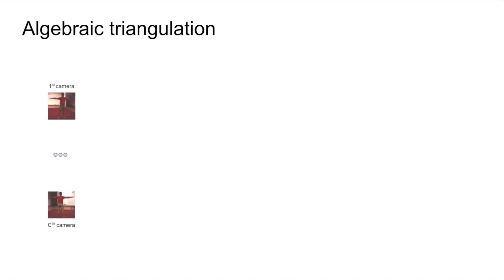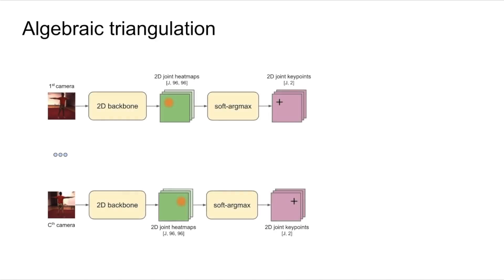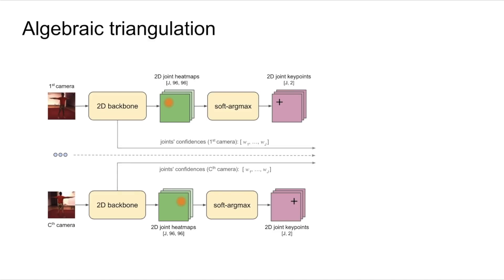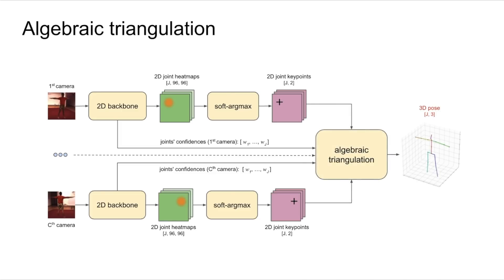Our first method is based on algebraic triangulation. The images from all cameras are processed with a convolutional neural network to get the 2D joint positions and corresponding confidences. The output 3D joint positions are triangulated from the estimated data. The pipeline is fully differentiable and trained end-to-end.